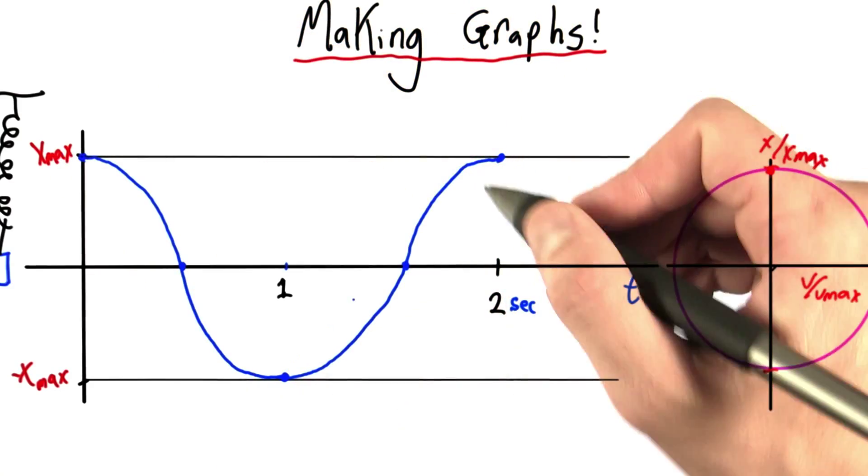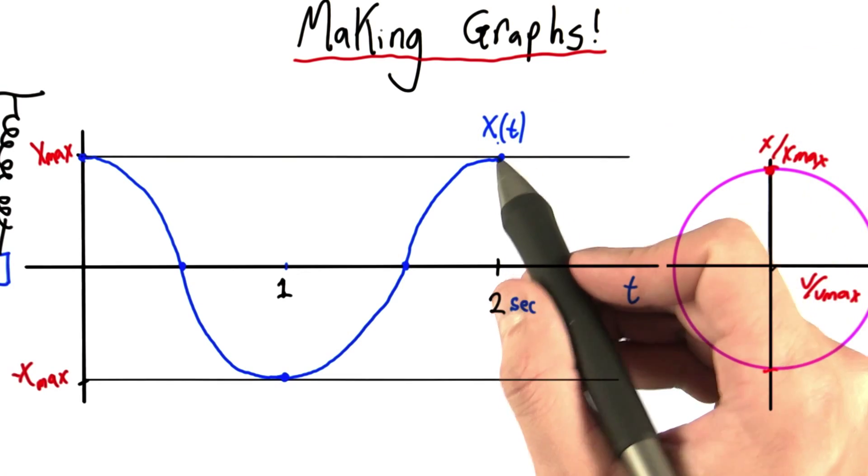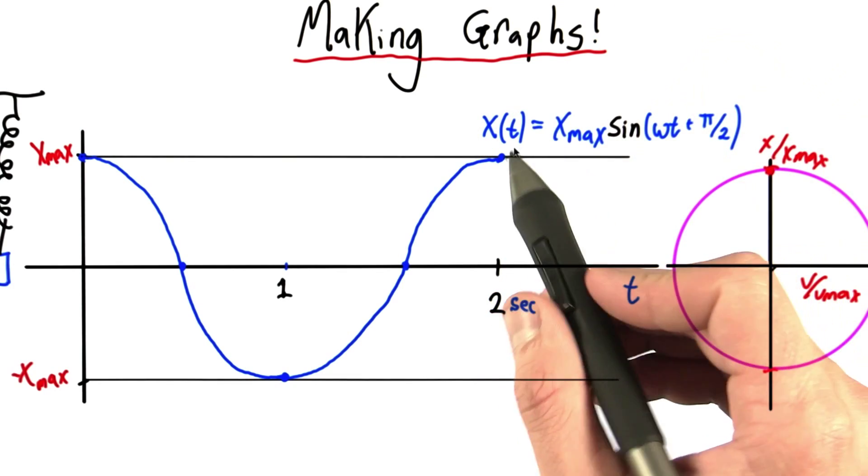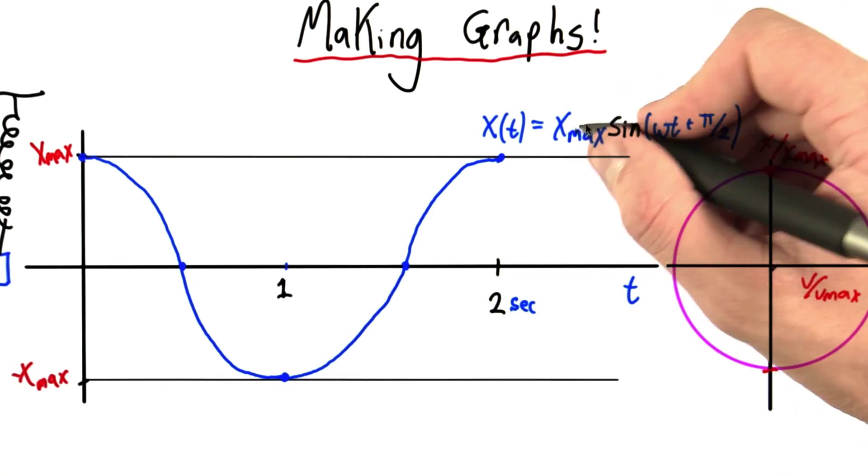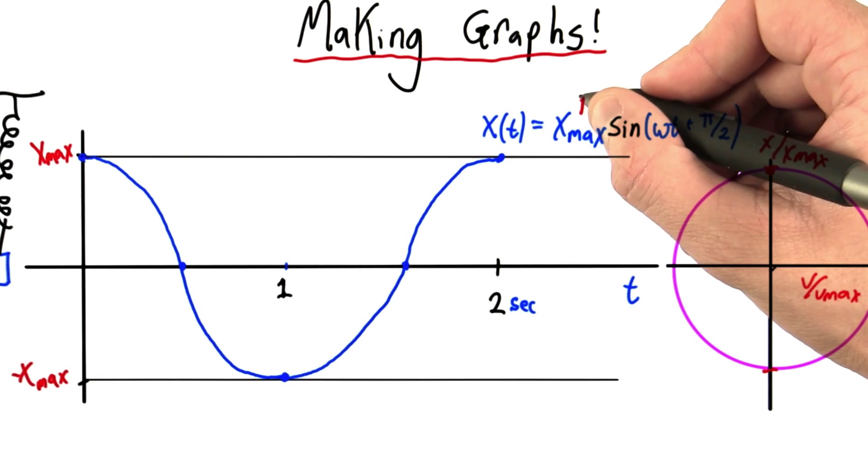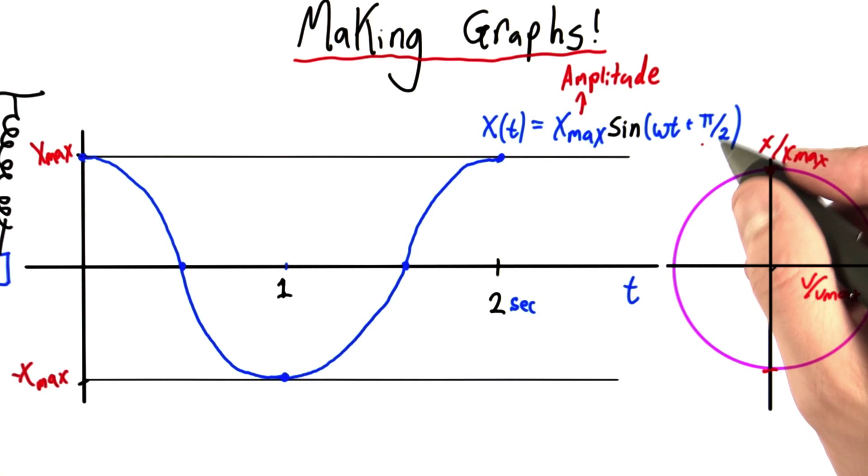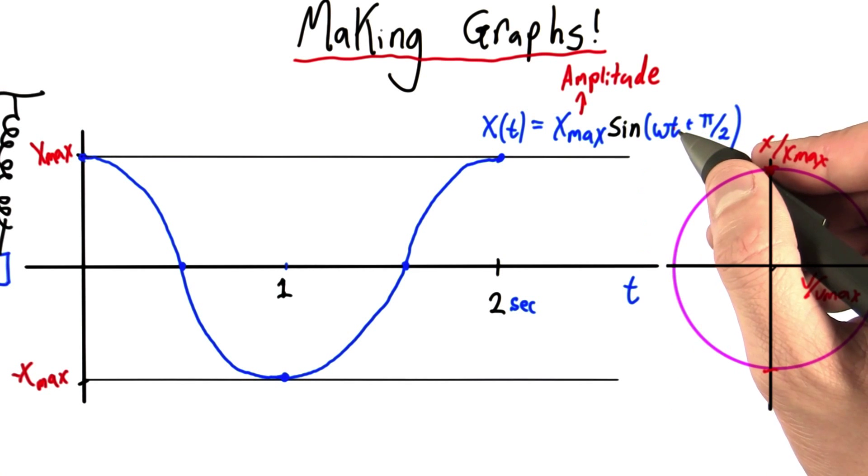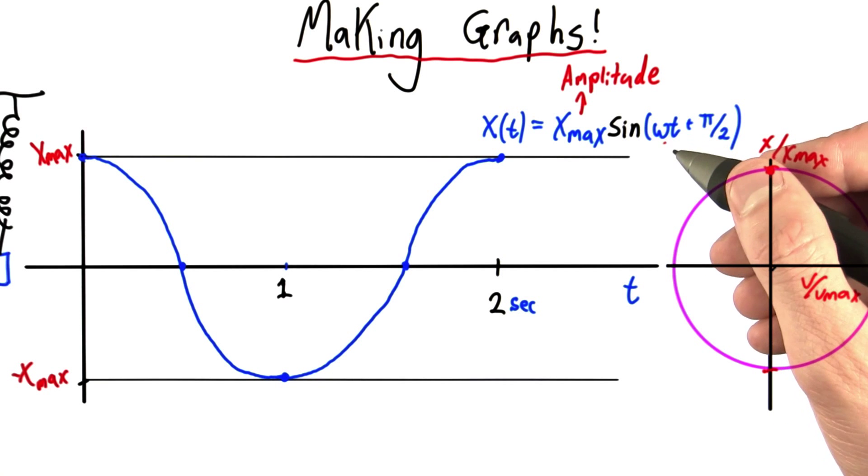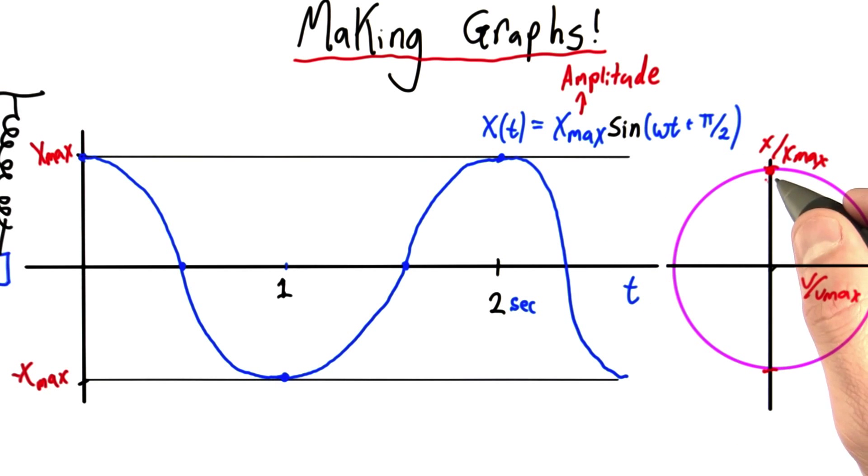This is a graph of position versus time, which we call x(t). And this is a wonderful equation. It says that we have some maximum, let's call this amplitude, that's modified by this function, sine of omega t plus pi over 2. This is just a function that, whenever I plug in a t, gives me a number between negative 1 and 1, and it repeats forever.